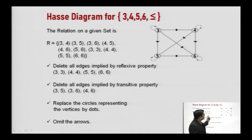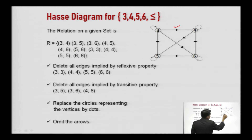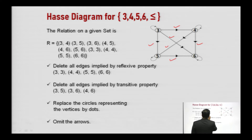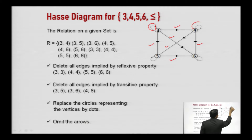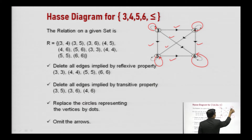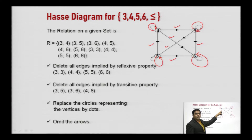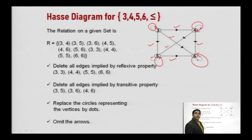I can represent this relation as a directed graph (digraph). The edges are: 3→4, 3→5, 3→6, 4→5, 4→6, 5→6, and self-loops on each of 3, 4, 5, 6. Now to convert this to a Hasse diagram, I know this relation is already a poset. So I will remove all self-loops first.